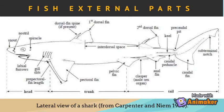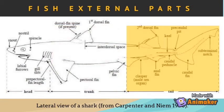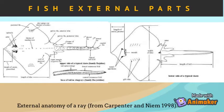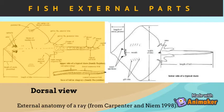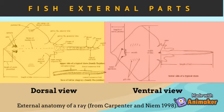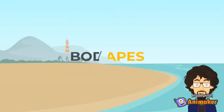This figure shows the external anatomy of a shark, showing its lateral view. You can also see the different components such as the head, the trunk, and the tail. For the ray, on the left side is the dorsal view and on the right side is the ventral view.